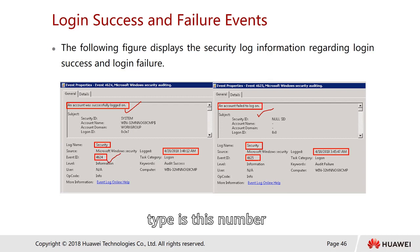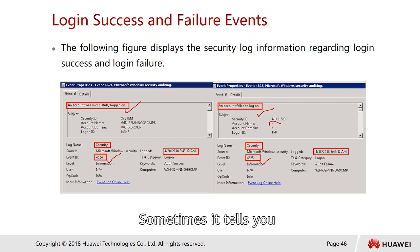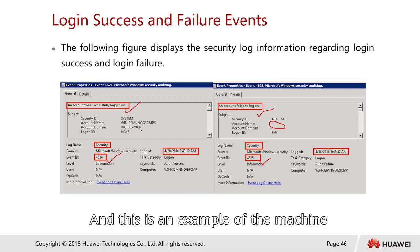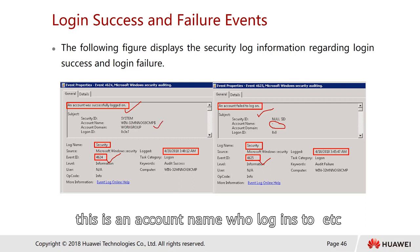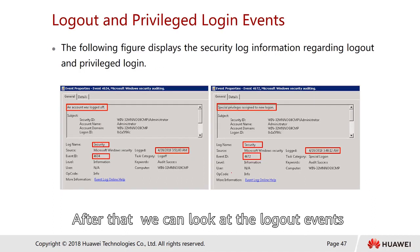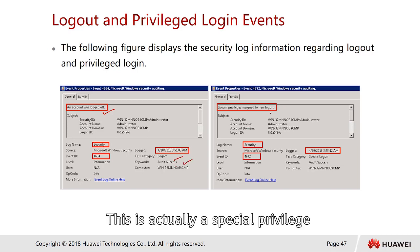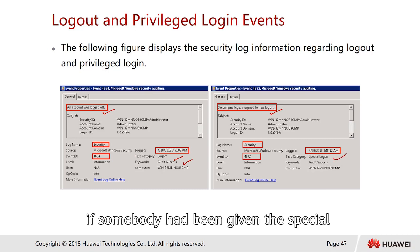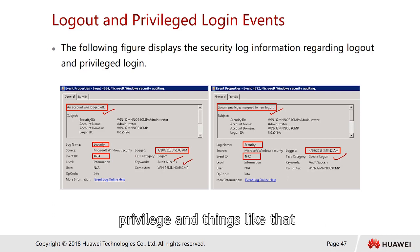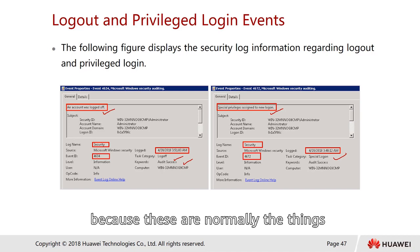Here are some examples: one log entry shows a successful login, another shows a failed login. The event type number is displayed for each. You can see the username the person attempted to use, the account name logged into, and other details. We can also look at lockout events. Additionally, event 4672 captures special privileges assigned to a new login — something a security administrator should pay close attention to.